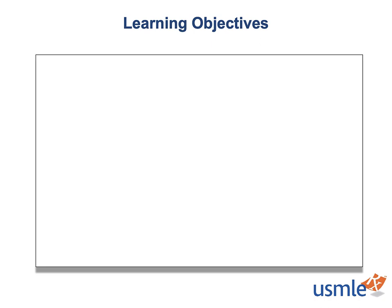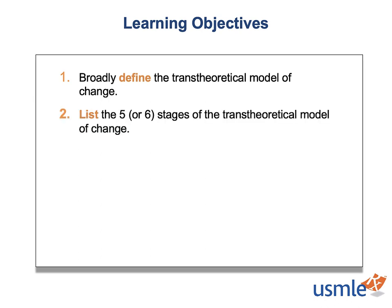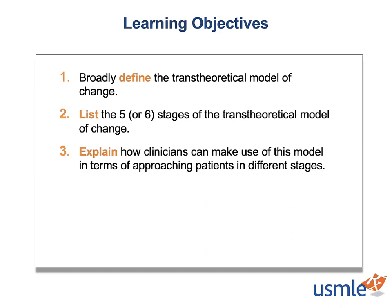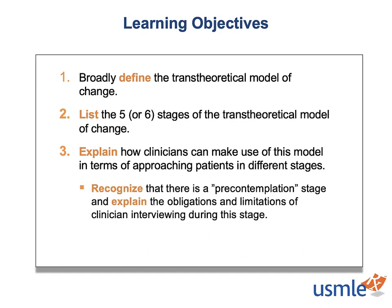By the end of this episode, you'll be able to: 1. Broadly define the trans-theoretical model of change. List the five or six stages of the trans-theoretical model of change. Explain how clinicians can make use of this model in terms of approaching patients in different stages. Recognize that there is a pre-contemplation stage, and explain the obligations and limitations of a clinician interviewing during this stage.